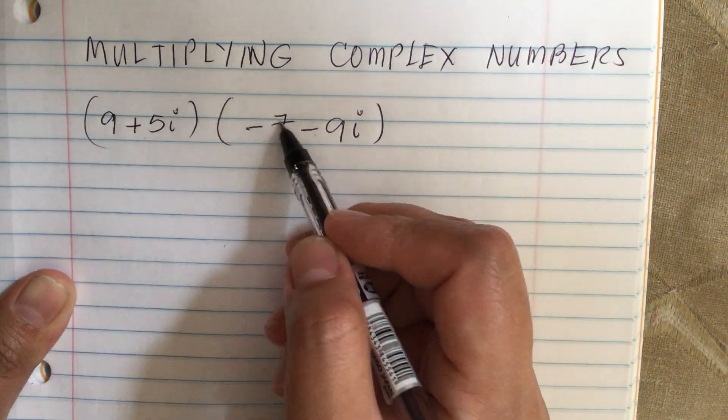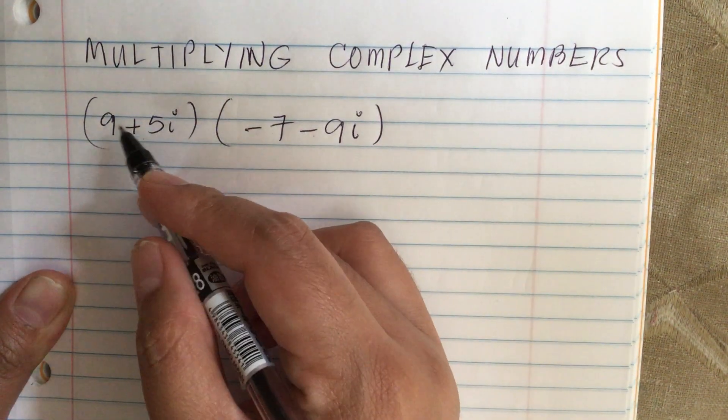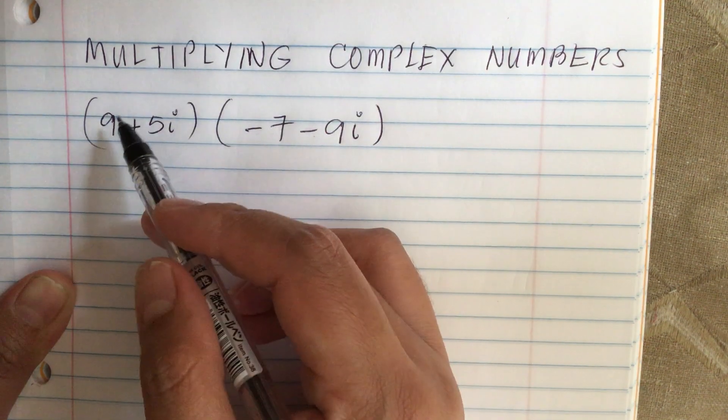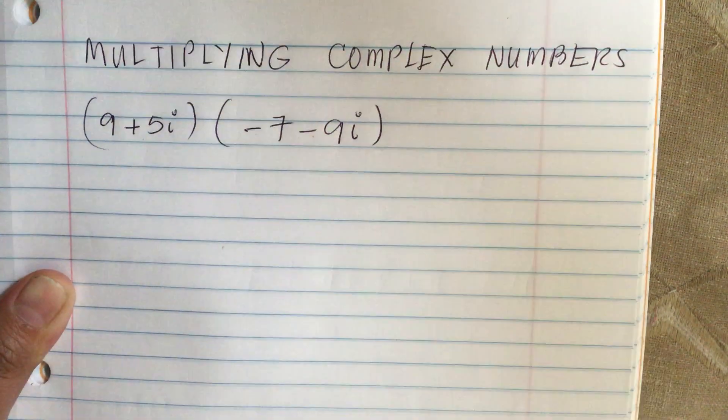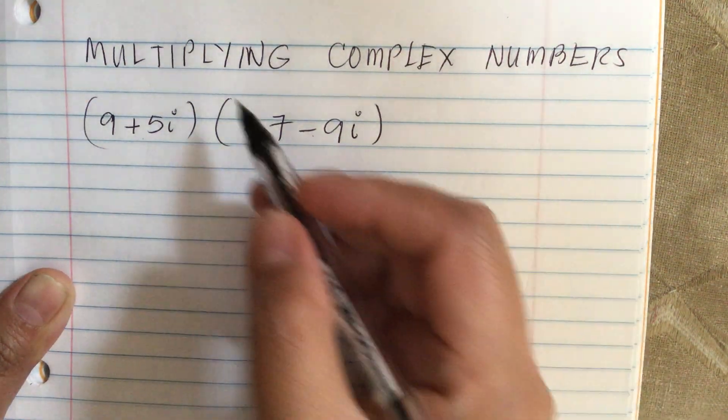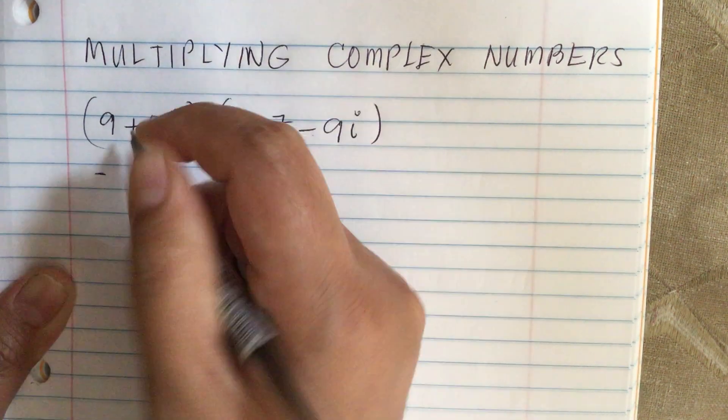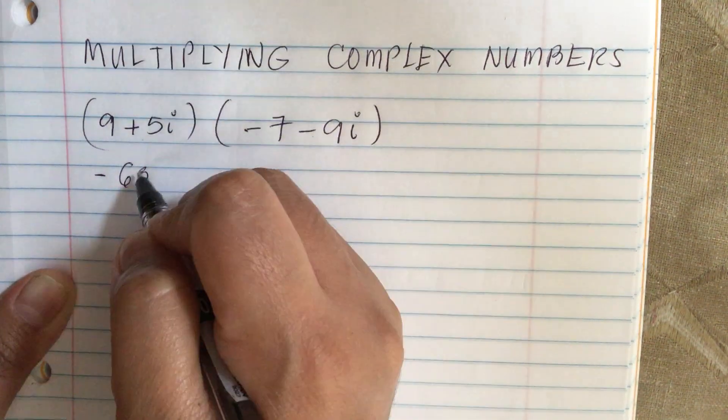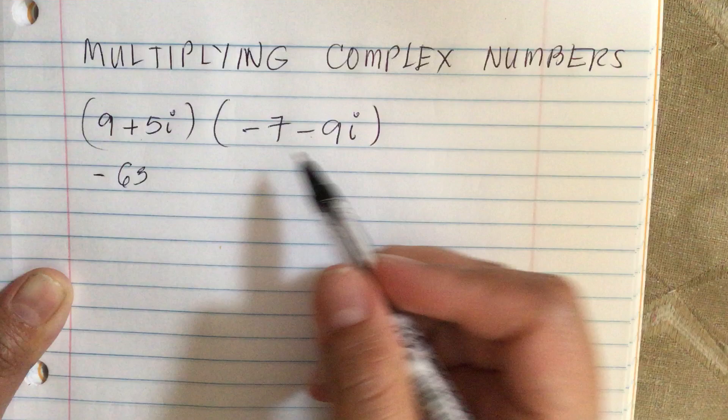First times the first: 9 and minus 7. So 9 times minus 7 is equal to minus 63.